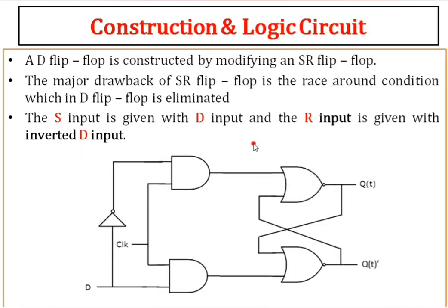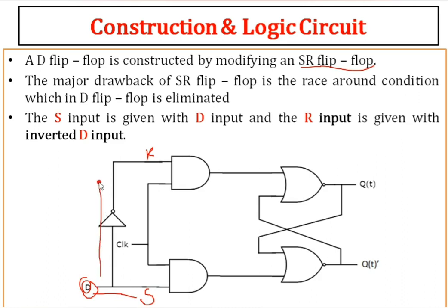Now we will see the construction and logic circuit. D flip-flops are constructed by modifying the SR flip-flop. In the SR flip-flop, we have S and R inputs. Here we take only a single input: D goes directly to S and the inverted input goes to R. This is the logic circuit of the D flip-flop. To observe the operation, we need the truth table of the AND gate and the NOR gate, as these two are AND gates and these two are NOR gates.